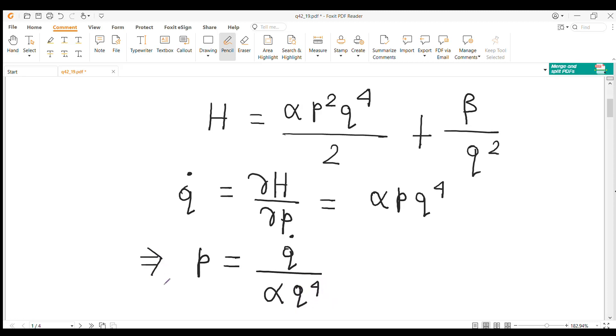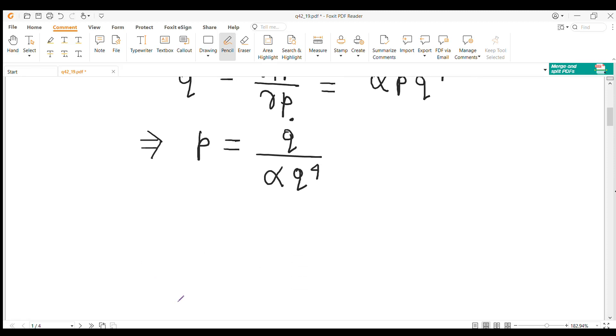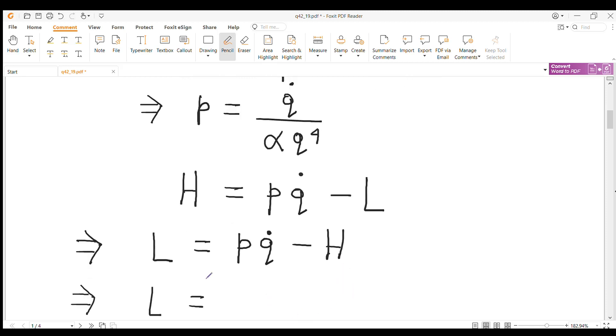The Hamiltonian H is equal to p q dot minus L, where L is the Lagrangian. So L is equal to p q dot minus H. Here p is equal to q dot by alpha q to the power 4.